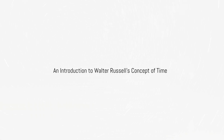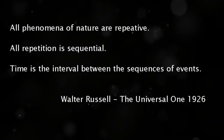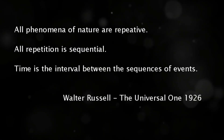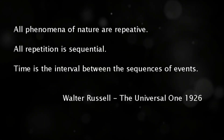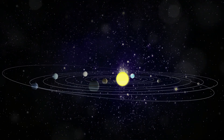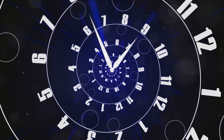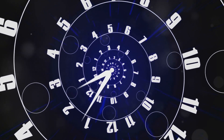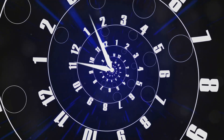An introduction to Walter Russell's time dimensions and concept of time. All phenomenon in nature are repetitive. All repetition is sequential. Time is the interval between the sequences of events. Walter Russell offered a unique perspective on the universe and its workings. Central to his vision was the concept of a rhythmically balanced universe. Russell delved into the nature of time, proposing a multidimensional framework that extended beyond our conventional understanding.